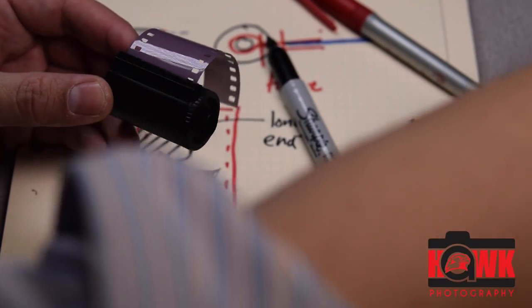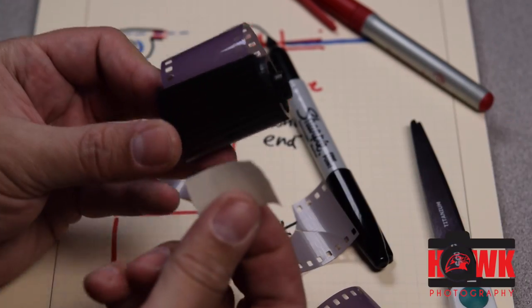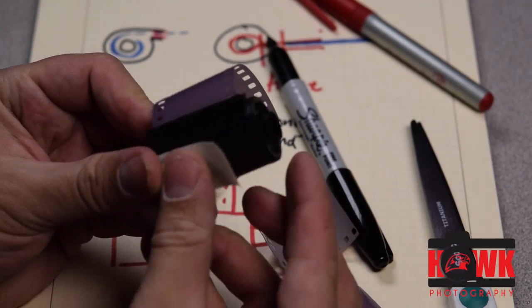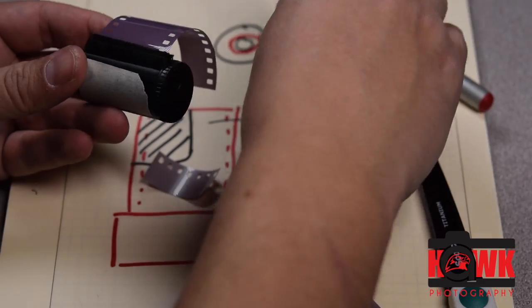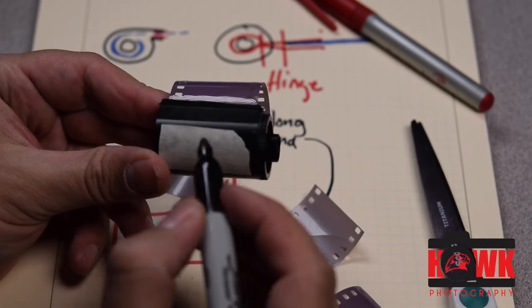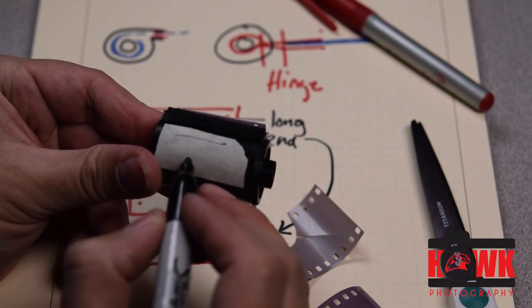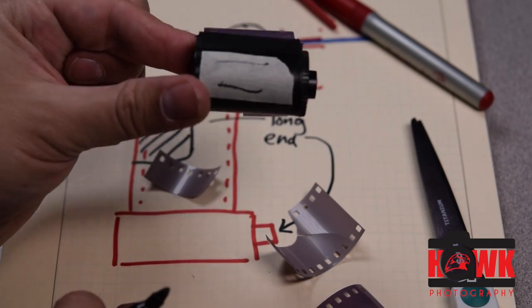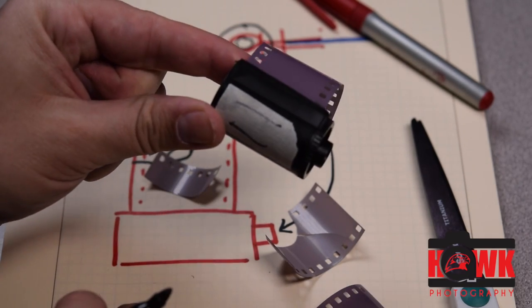Last thing is, label this. This happens to be a practice roll, which looks exactly like a regular roll of film. And so I'm just going to go ahead and label this with my name. And then I'm going to write practice down below. And that way I know what I've got.